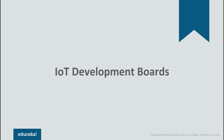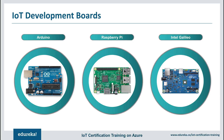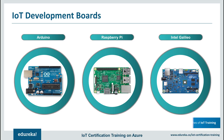Now we'll look at the different IoT development boards. Arduino is an open-source platform used for building electronic projects — it consists of both a physical programmable circuit board and a piece of software or IDE. Raspberry Pi is a credit card-sized computer originally designed for education, inspired by the 1981 BBC Micro. It is a single-board computer based on a Broadcom system-on-chip with an ARM processor of around 700 MHz, a GPU, and 256 to 512 MB RAM — costing around $35 for the B model. Intel Galileo is the first in the line of Arduino-certified development boards based on Intel x86 architecture, designed for the maker and education communities, and the first board based on Intel architecture designed to be hardware and software pin-compatible with shields designed for the Arduino Uno R3.